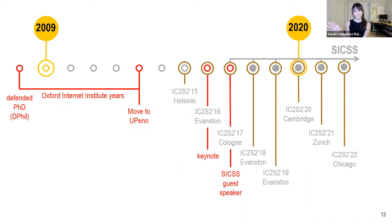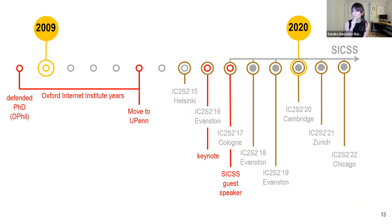Here is the timeline of my trajectory within the field. Before you realize it, you will be drawing similar timelines about your own careers — time flies, so make the best use of it. I defended my dissertation in 2008, a year before the foundational computational social science article came out in Science. I wrote my dissertation about how the web was changing civil society and about the way collective action can be organized in a decentralized manner using what was back then this new form of communication.